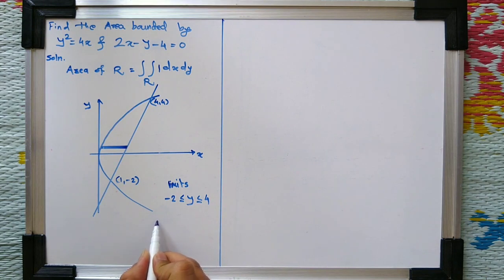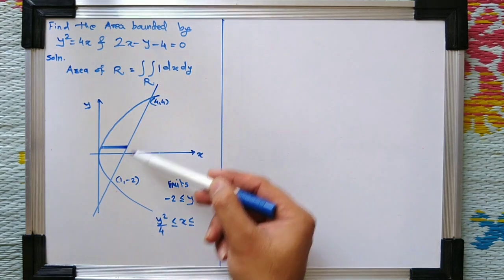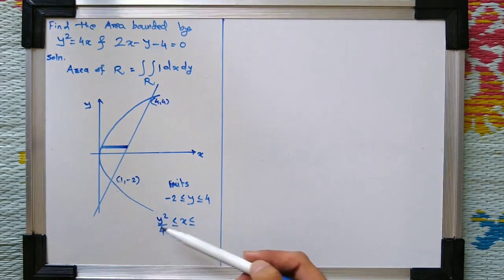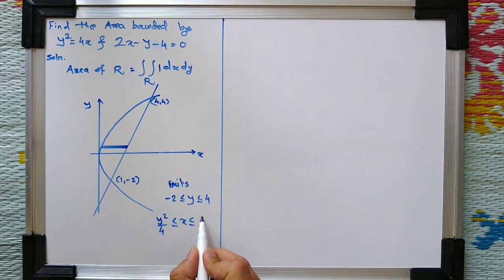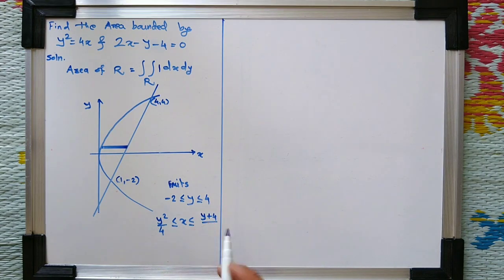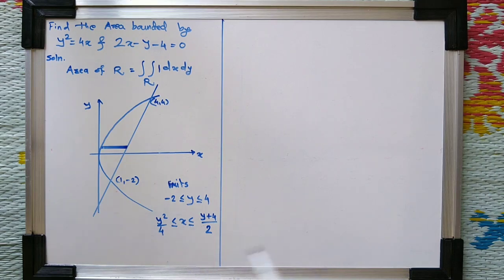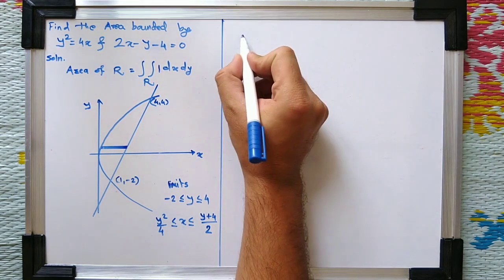Now, how does x vary? The left end of the strip varies according to the parabola, so x is always greater than or equal to y²/4. The right end varies according to the line, so x is always less than or equal to (y + 4)/2. Since the limits of x are functions of y and the limits of y are constants, the order of integration is first with respect to x, then with respect to y.